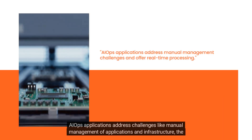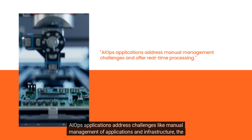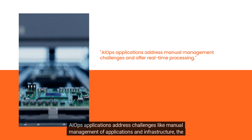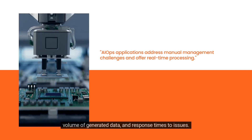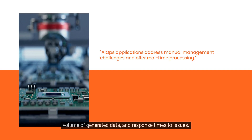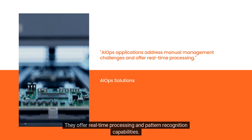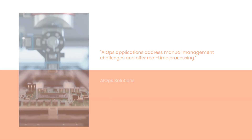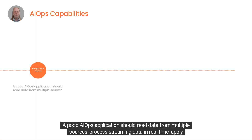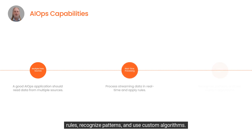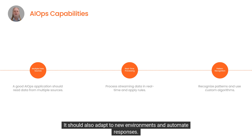AIOps applications address challenges like manual management of applications and infrastructure, the volume of generated data, and response times to issues. They offer real-time processing and pattern recognition capabilities. A good AIOps application should read data from multiple sources, process streaming data in real-time, apply rules, recognize patterns, and use custom algorithms. It should also adapt to new environments and automate responses.